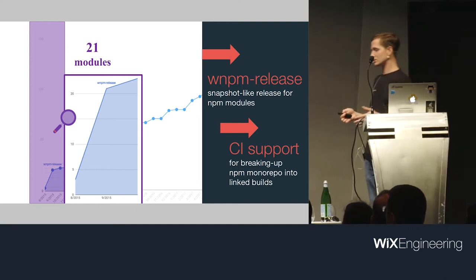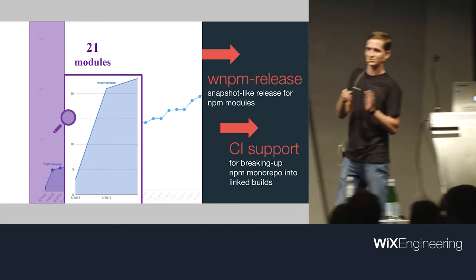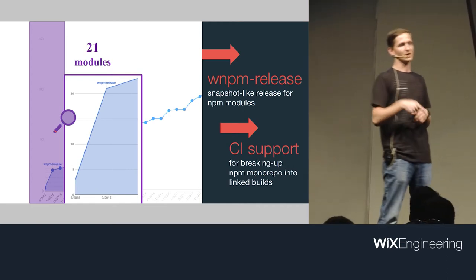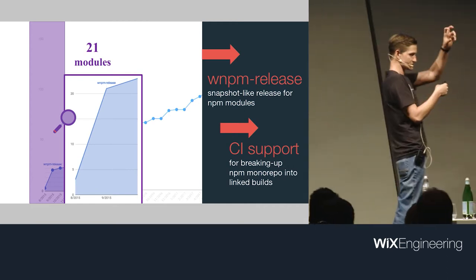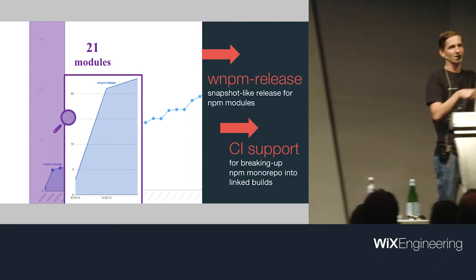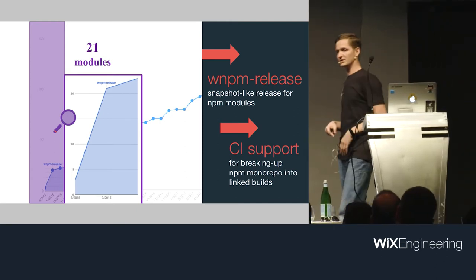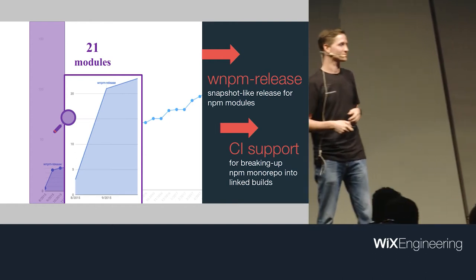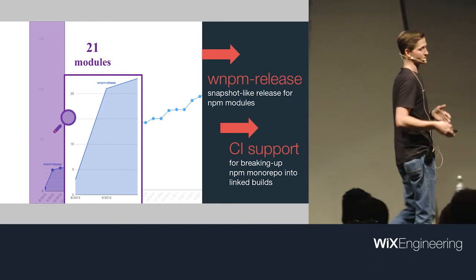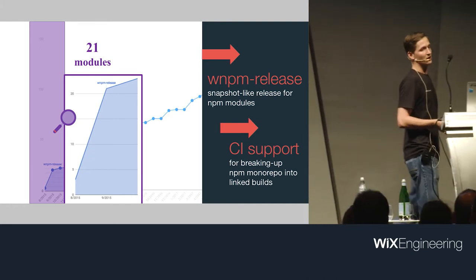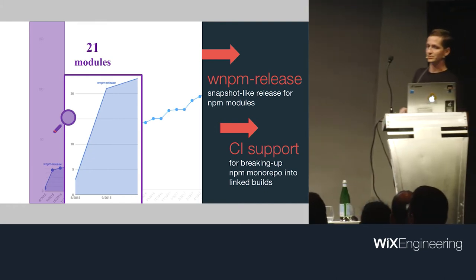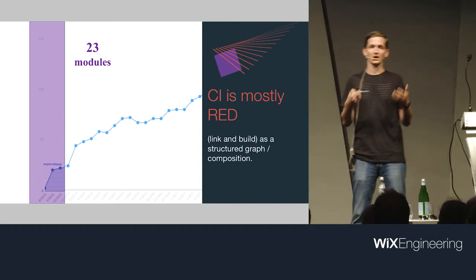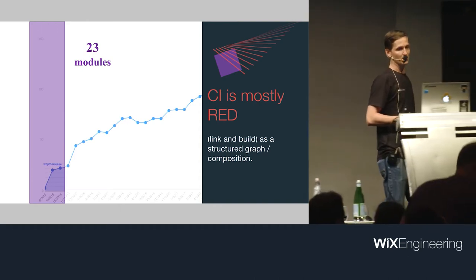At this point we were still breaking each other, but at least it was clear who to blame — you could see the commit in CI. So now I could tell someone to take care of it. It was an improvement, but CI was mostly red and I wanted more. What we usually do at Wix: we build a tool.